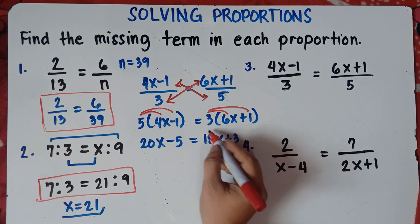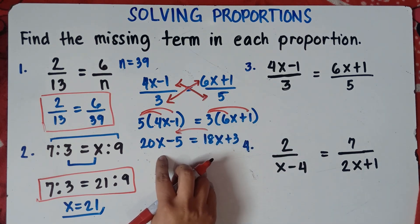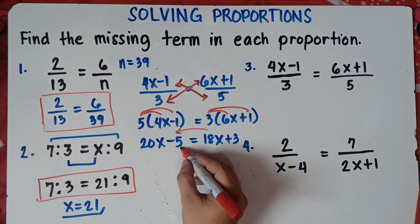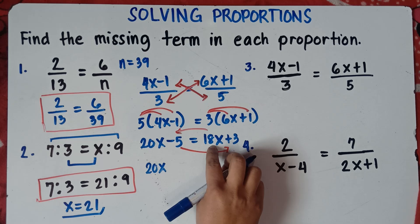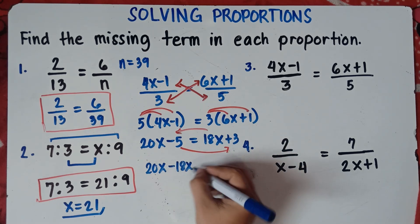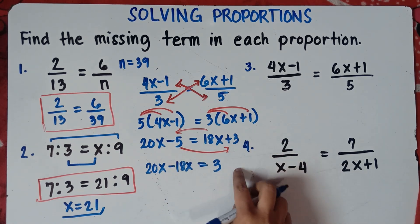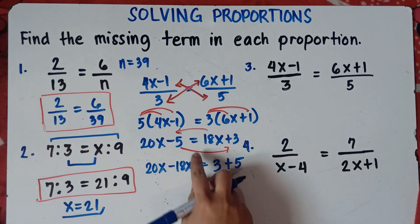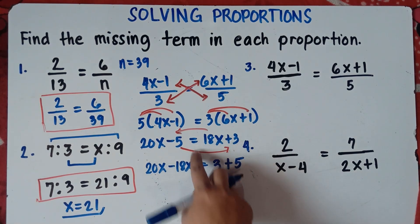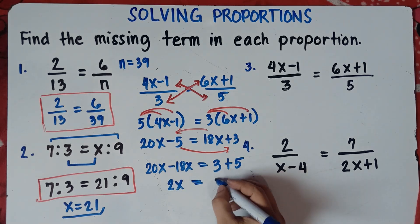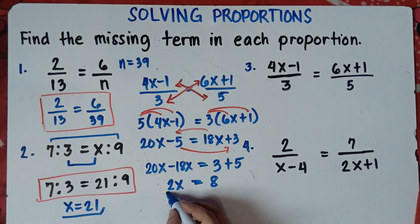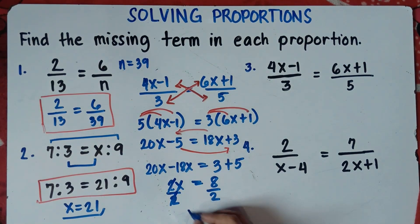Transpose 18x from right to left and transpose negative 5 from left to right — always change the sign when crossing the equal sign. So we get 20x minus 18x equals 3 plus 5. That is 2x equals 8. Divide both sides by 2 and cancel. 8 divided by 2 is 4. Therefore, x equals 4.